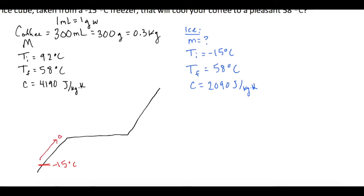We're going to take it up to zero. It's going to then come all the way over until all of it is melted, and then take it up to 58 degrees Celsius. Our coffee is up here. Let's say this is 98, and it's going to come down to 58.